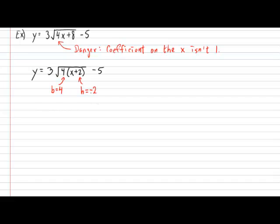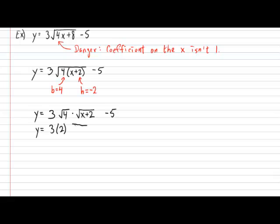So if we apply that property, we end up with Y equals 3 multiplied by — the property states that if you have the square root of a product, the two items in the product can be separated. So we have the square root of 4 multiplied by the square root of X plus 2, and the minus 5 is never touched. Doing one final cleanup, we have Y equals 3 multiplied by 2 — since the square root of 4 is 2 — times the square root of X plus 2, and minus 5.